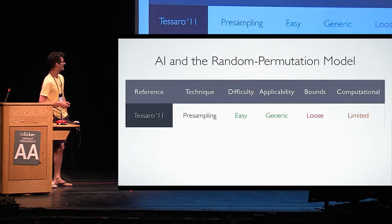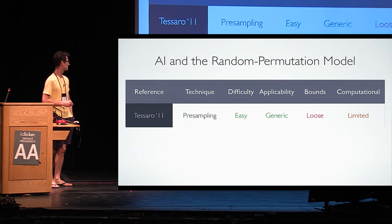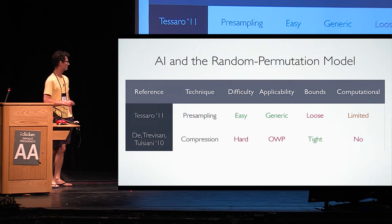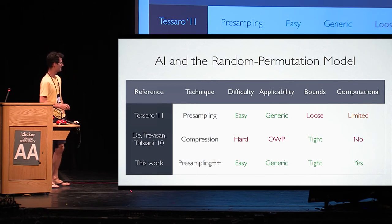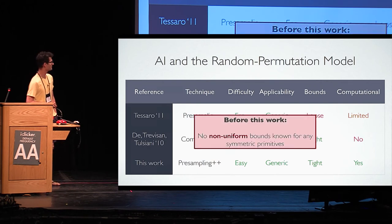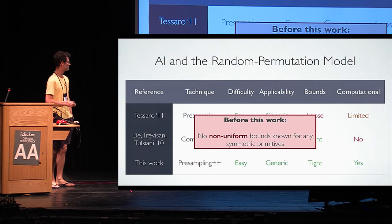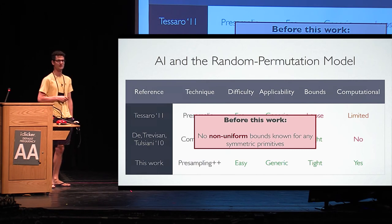What is the history in the random permutation model? Stefano extended Unruh's technique to the random permutation model, but the bounds are still loose. There are also known compression-based results—for example, for one-way permutations—but again these are application-specific and hard to derive. In this paper, we extend the improved pre-sampling technique to the random permutation model and to the ideal cipher model, yielding easy, generic, and tight proofs that are also applicable to applications relying on additional hardness assumptions. Notably, for symmetric primitives like SHA-2, SHA-3, and Even-Mansour, there were no known non-uniform bounds—no bounds accounting for preprocessing—prior to this work.